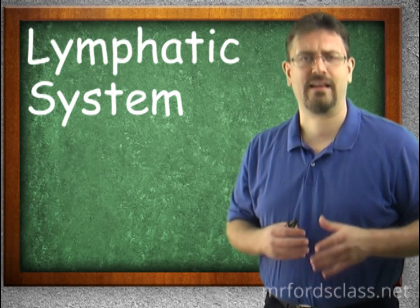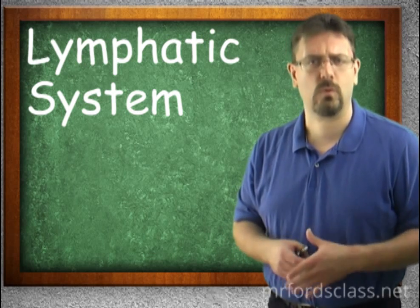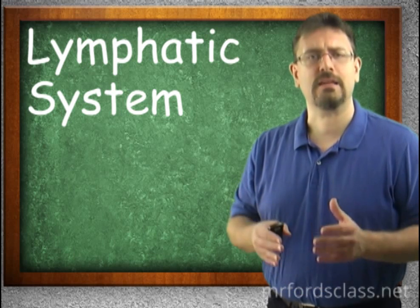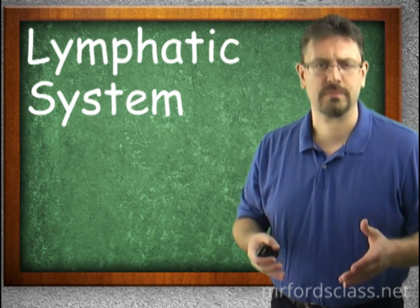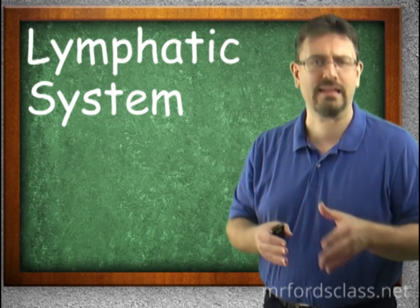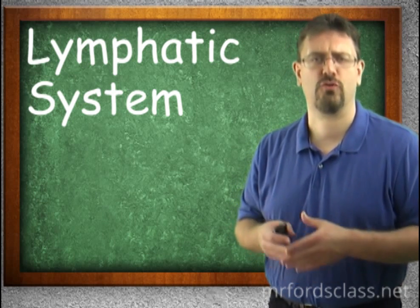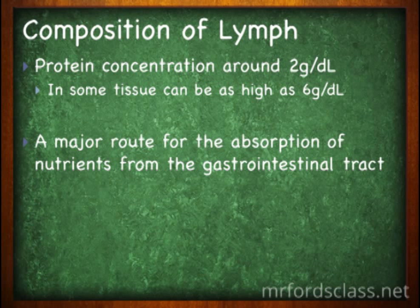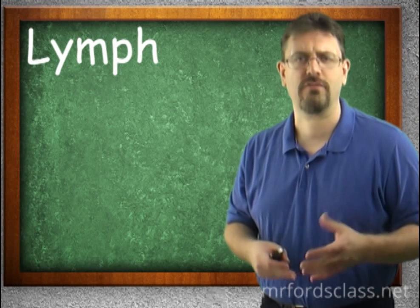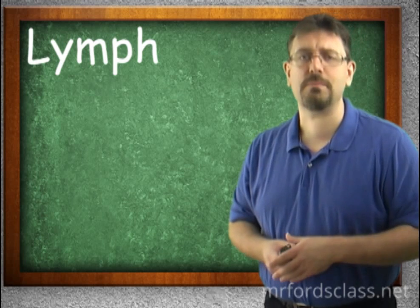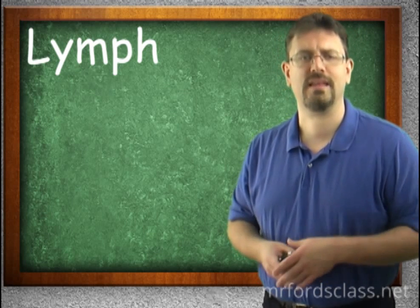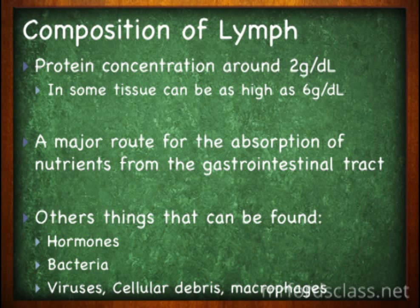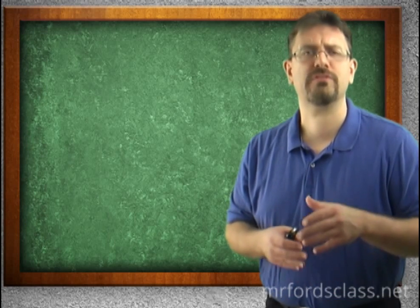Basically, the lymphatic system is there to retrieve all that extra fluid and other material that won't go back through the circulatory system. Lymph is composed of different things. As lymph first flows from tissues into the capillaries, it's pretty much the same as interstitial fluid — the fluid surrounding the tissues. The protein concentration is around 2 grams per deciliter, and in some tissues it can be as high as 6 grams per deciliter. The lymphatic system is also a major route for absorption of nutrients from the gastrointestinal tract, including dietary lipids. We also find hormones, bacteria, viruses, cellular debris, and macrophages within the lymph. Some of this will be covered in more detail when we discuss the immune system.